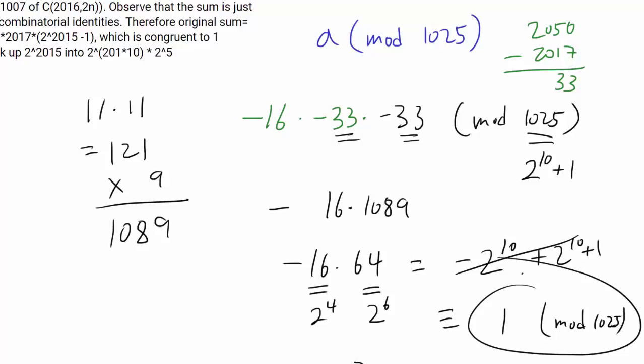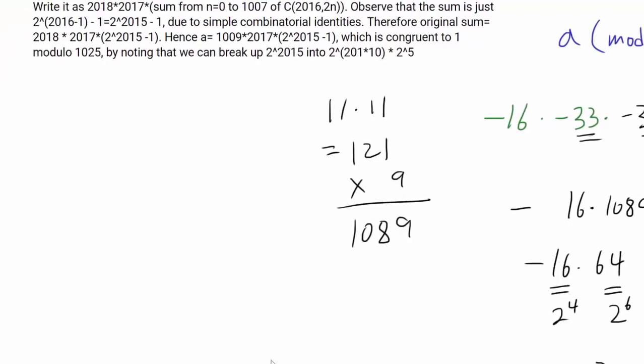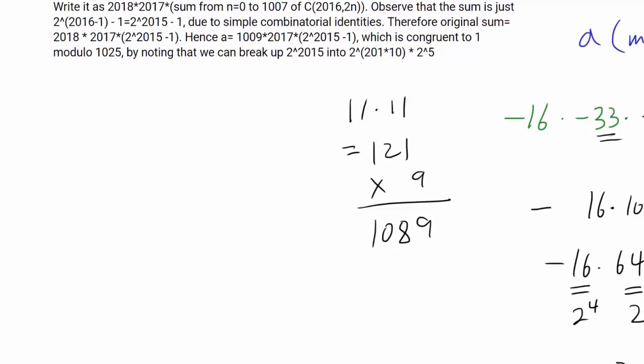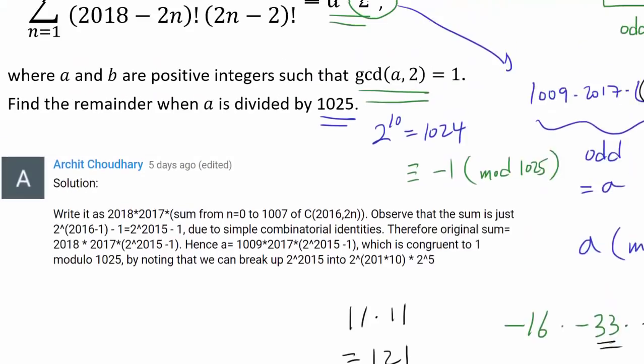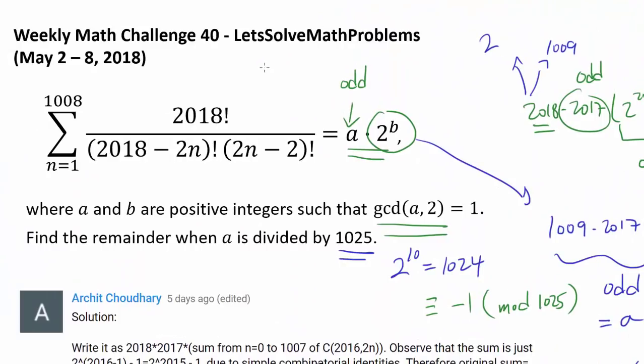So the remainder when we divide this expression by 1025 is equal to 1.